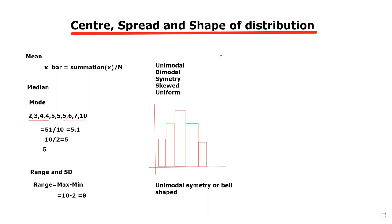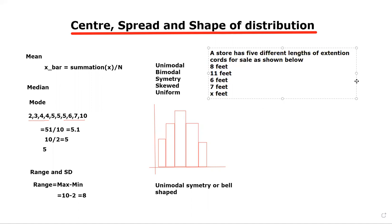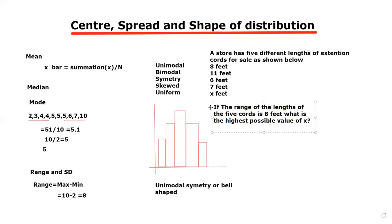Let's do a harder example on center spread and shape of distribution. A store has five different lengths of extension cord for sale as shown in the table below. That is, the store sells five different lengths of extension cords. One cord is 8 feet, another is 11 feet, another is 6 feet, another is 7 feet and another is X feet.